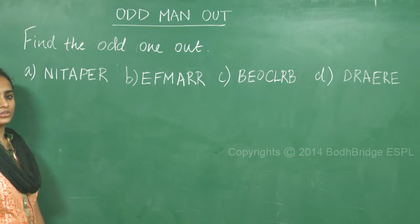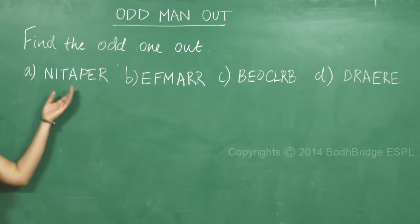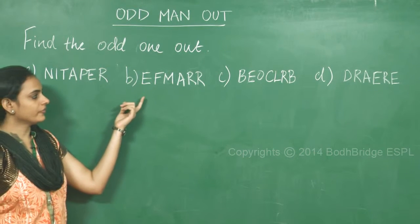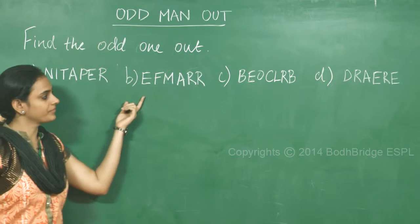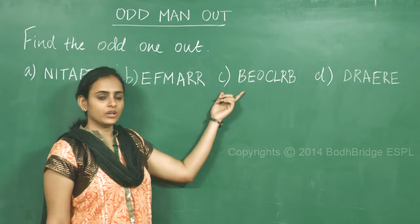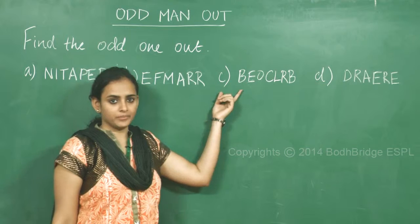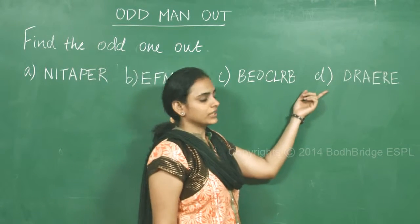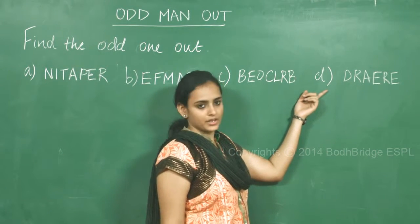Find the odd one out. Option a: n i t a p e r. Option b: e f m a r r. Option c: b e o c l r b. And option d: d r a e r e.